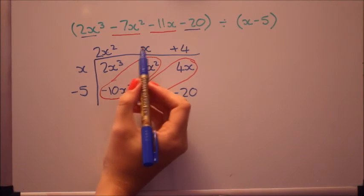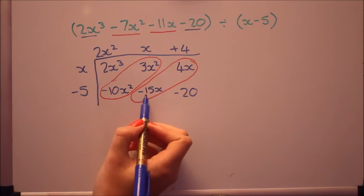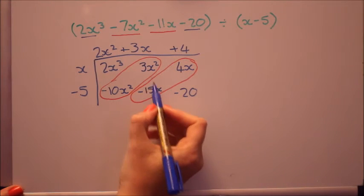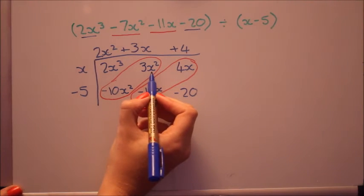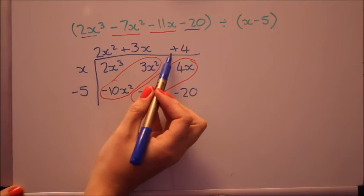Now let's see if there's a number we can put here that will make those two right. Minus 5 times 3x will give us minus 15x. And just check for this one. 3x times x does give us 3x squared. So we're happy. So that all works. That's the remainder then.